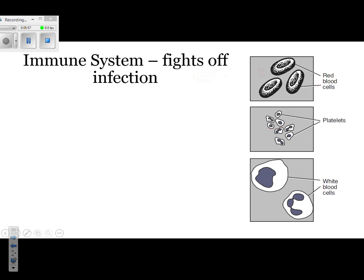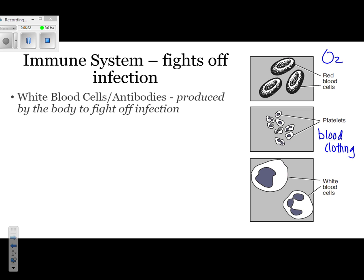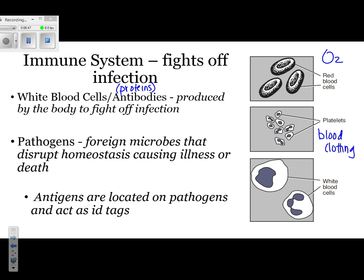Your immune system fights off infection. On the right-hand side we have three different types of cells — only one is part of the immune system: the white blood cells. White blood cells have a variety of jobs; they can engulf bacteria, or they can help with the tagging and recognition of different types of foreign pathogens. Red blood cells are involved in moving oxygen around your body, and platelets are involved in blood clotting. Antibodies are proteins that can be made by white blood cells and are produced by the body to fight off infection — typically called a pathogen, sometimes also called a microbe.